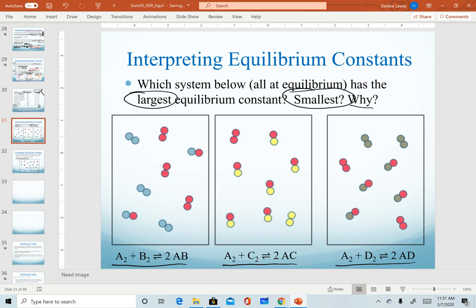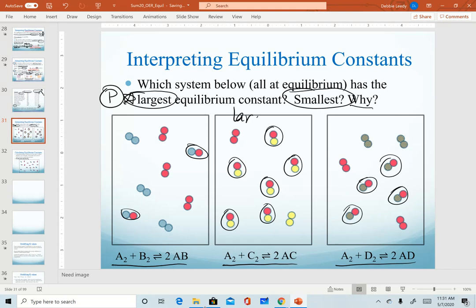Now that you have an answer, we want to determine which one is the largest equilibrium constant. Realize that largest means it has the most products in it. So in our first beaker, we only see two products. In our second beaker or container, we see a total of six products. And in this third one, we see a total of four. And so our second container, our one in the middle, would have the largest k value because it has the most products.